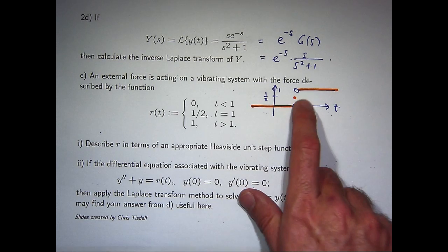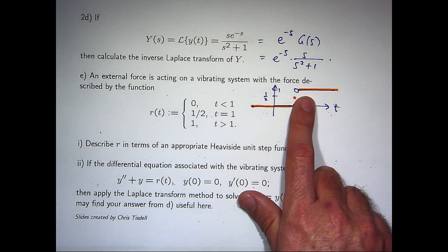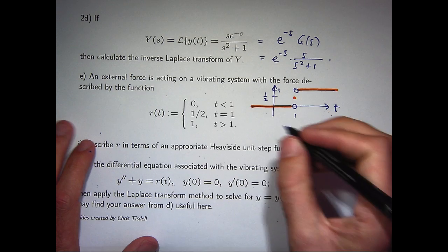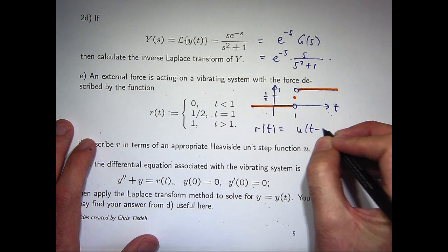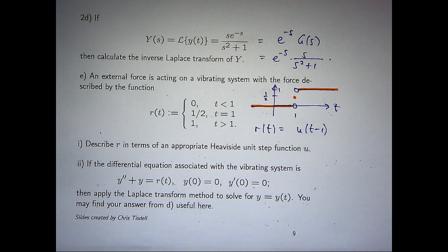In fact, that is the Heaviside unit step function where the jump occurs at t equals 1. So this is actually a special Heaviside step function. So if we wanted to write it as a Heaviside step function, well, here it is, right here, this u, u notation.